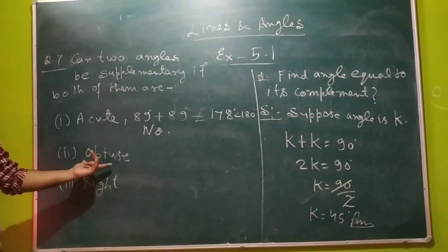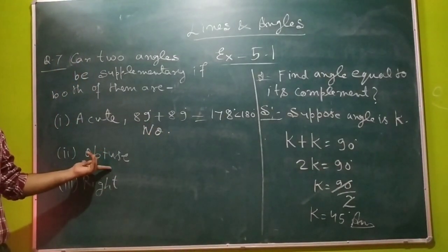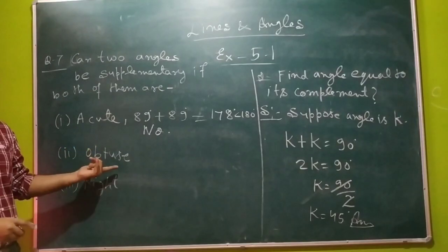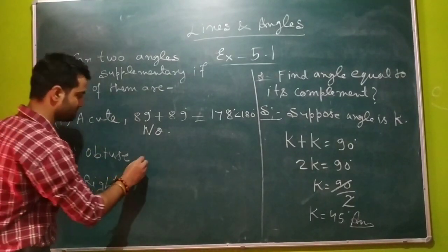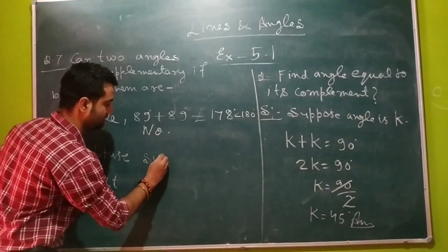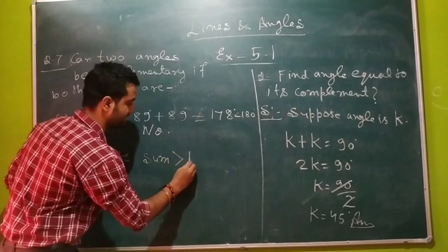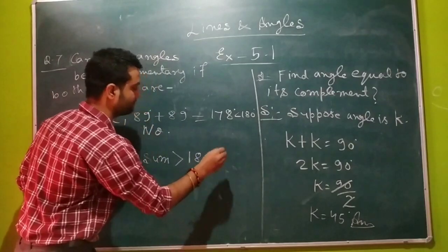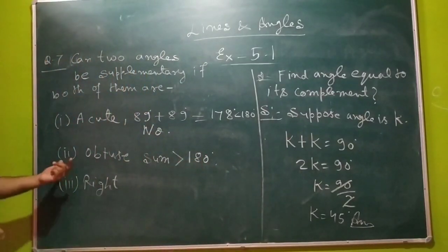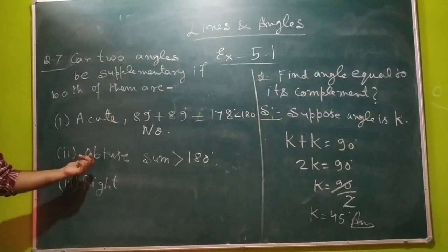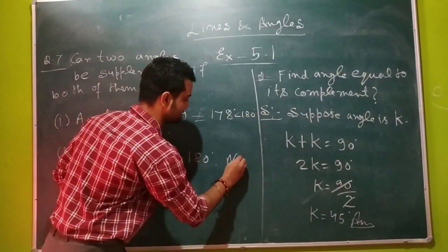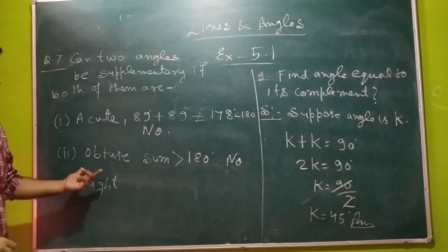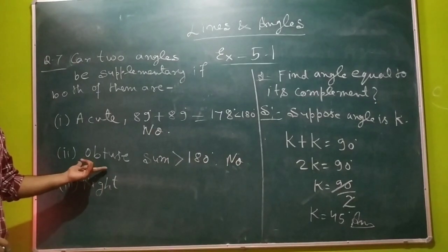When we are talking about obtuse angles, the sum of 2 obtuse angles will always be greater than 180 degrees. Since whenever we add 2 obtuse angles the sum is always greater than 180 degrees, 2 obtuse angles also cannot form supplementary angles. I will request you to check this by taking 2 or 3 obtuse angles of your choice.